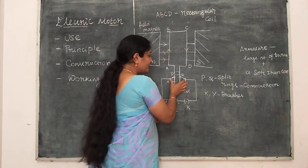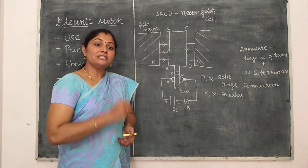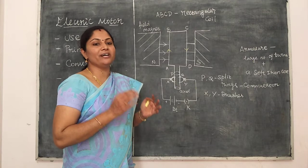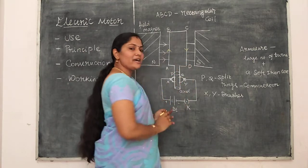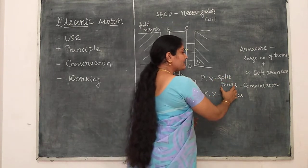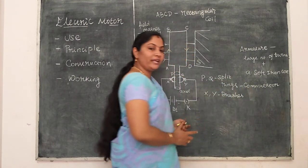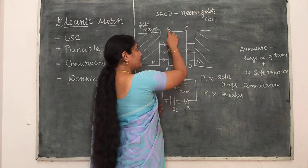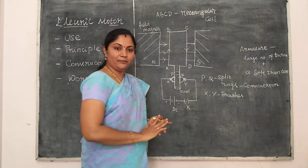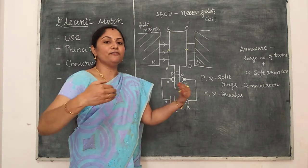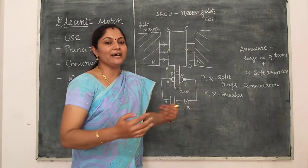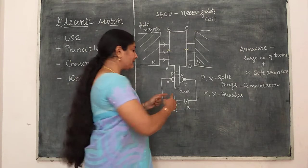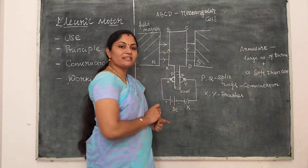You should remember the function of split rings. Split rings act as a commutator that reverses the direction of current in the arms of the rectangular coil. So the split rings act as a commutator that reverses the current in the coil, due to which current always flows in the A, B, C, D direction only. So the coil always experiences a force and rotates in a single direction. Brushes attach to the split rings and transmit electrical energy from the battery to the rectangular coil.